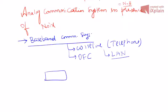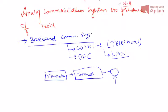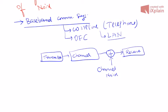The baseband communication system can be modeled as: a transmitter, followed by a communication channel — which can be any medium like wire, optical fiber, or LAN cable — then the channel noise gets added, and finally you have the receiver. The concepts here are very useful when you want to analyze passband communication systems where modulation is used.